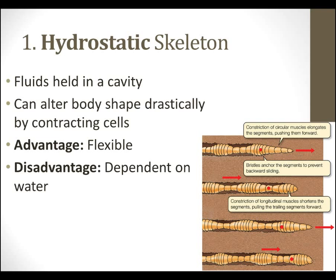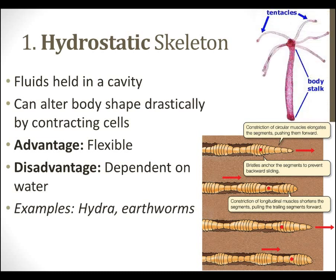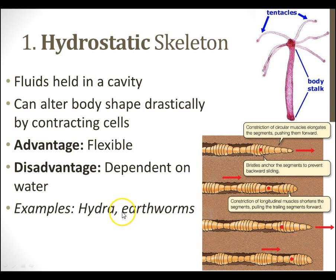The disadvantage, of course, is being dependent upon water. Earthworms in particular are dependent upon water not only for their skeleton, but also for their respiration — they need to breathe through their skin. Examples of this are going to be hydra — and no, not the enemy of S.H.I.E.L.D. I'm referring to these little pond animals called hydra, with tentacles and body stalks. Hydra and earthworms are organisms that have a hydrostatic skeleton.